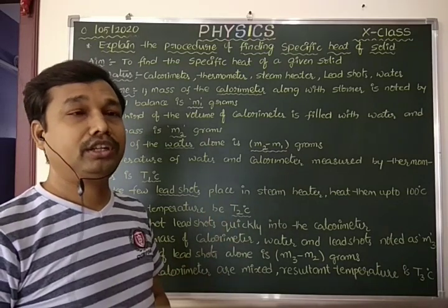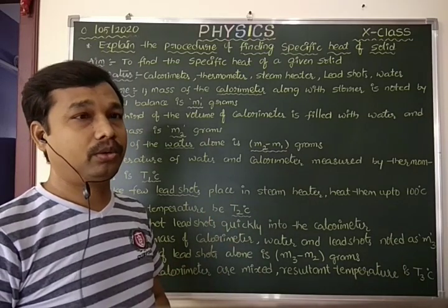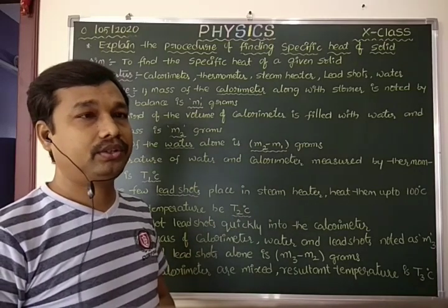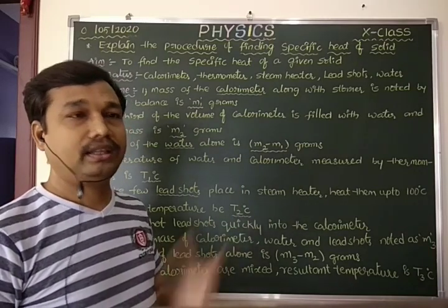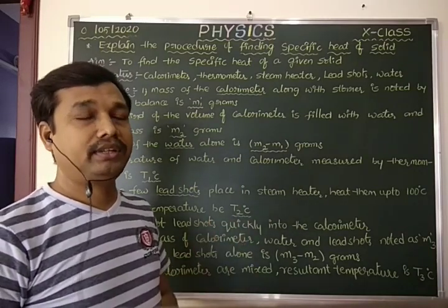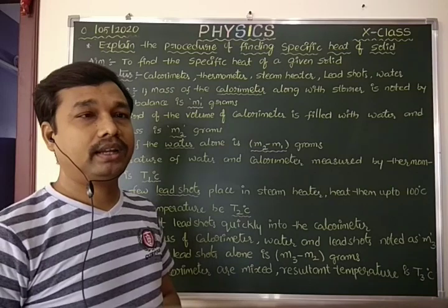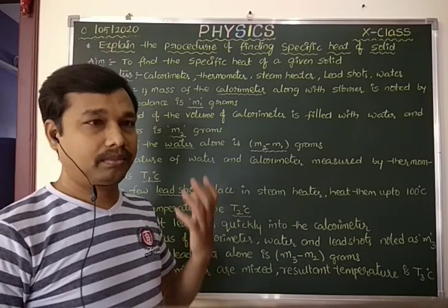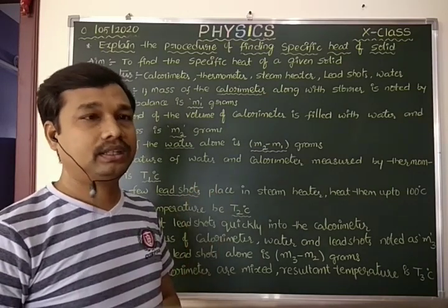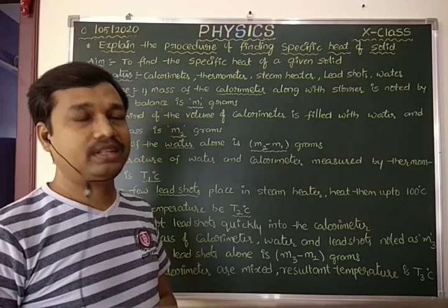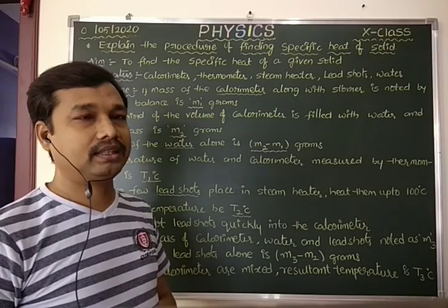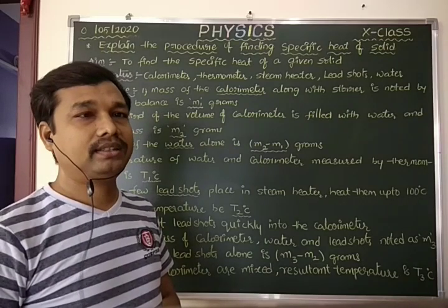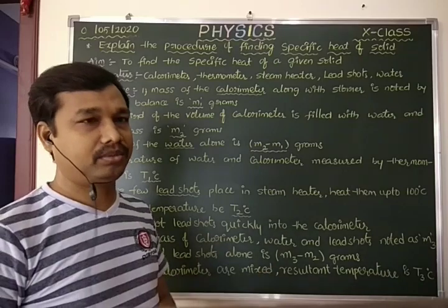Now for the procedure to find the specific heat of a solid: first, we need to take the calorimeter and measure its mass using a physical balance. Note it as M1 grams.